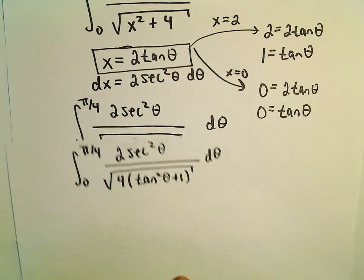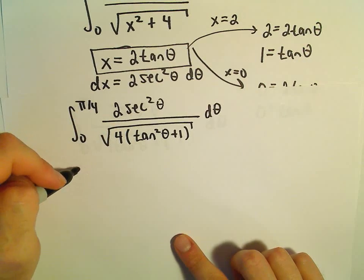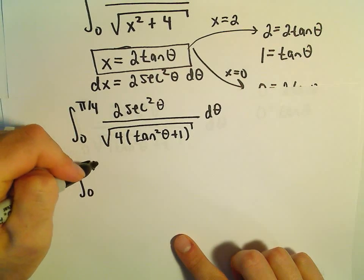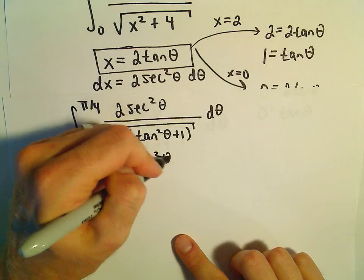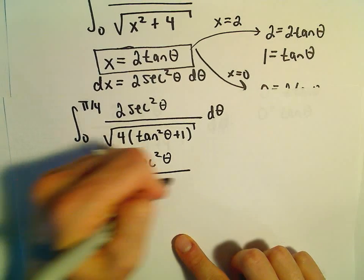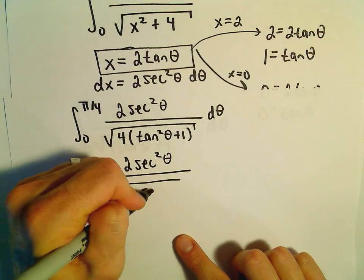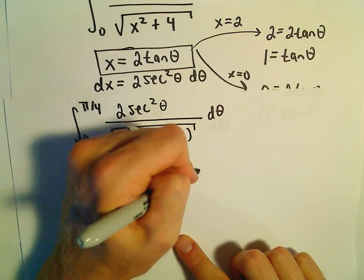But tan²(θ) + 1 equals sec²(θ), so we have the square root of 4sec²(θ) in the denominator.